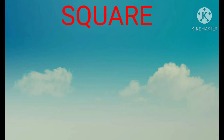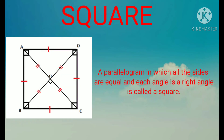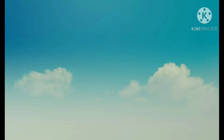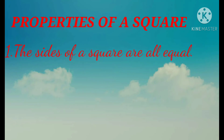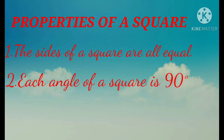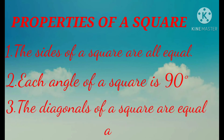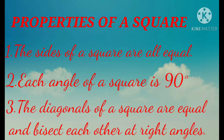Now let us see the next parallelogram named square. A square is a parallelogram in which all sides are equal and each angle is a right angle. Properties of a square are: the sides of a square are all equal, each angle of a square is 90 degrees, and the diagonals of a square are equal and bisect each other at right angles.